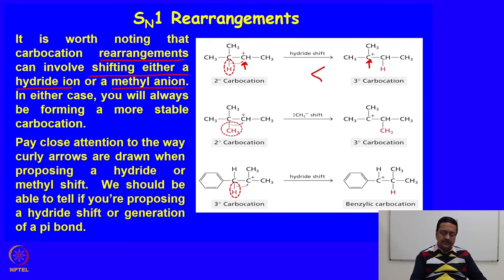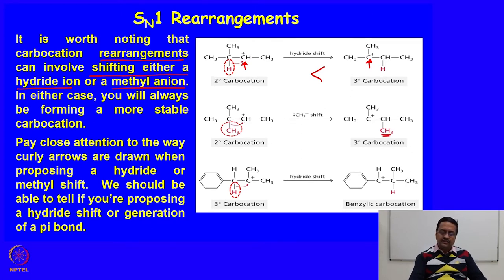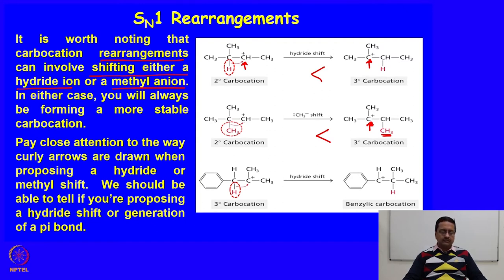In the second example, a methyl group is connected to a secondary carbocation, and if this methyl group shifts to the carbocation positive side with its bonding pair of electrons, we get a new tertiary carbocation which is more stable than the original secondary carbocation. This type of hydride or methyl shift is very common when the reaction proceeds through an SN1 pathway.